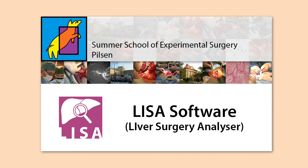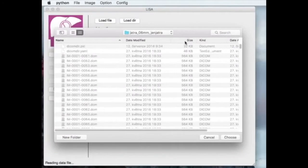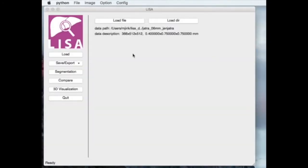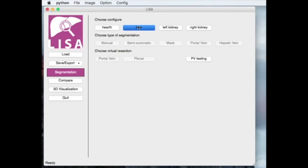The next step of processing is virtual resection, when a virtual resection plane is constructed with respect to the vasculature of the individual liver. Finally, volumes of the resected tissue and the liver remnant parenchyma can be calculated.